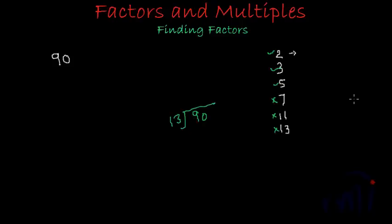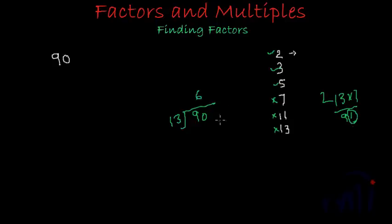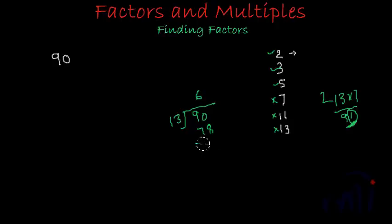13 multiplied by 7 is just 1 more than 90, so we are definitely going to have a remainder. To check, let's divide 90 by 13: 6 times 13 is 78. 90 minus 78 gives a remainder of 12. So 90 is not divisible by 13. We have checked divisibility, and only 2, 3, and 5 divide 90 completely.